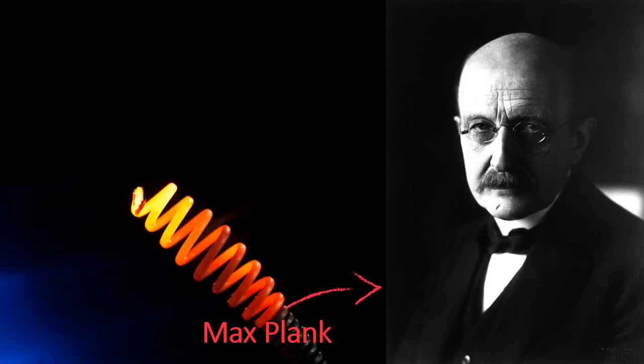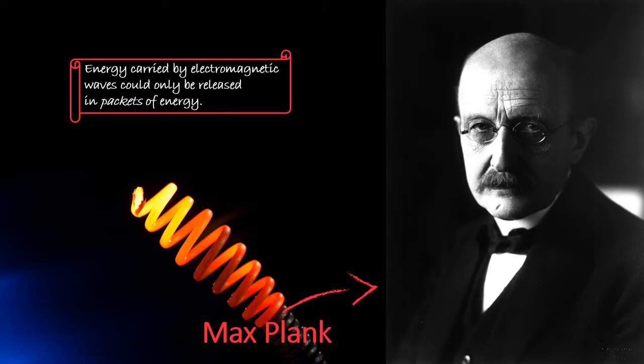In the same year, 1900, a German physicist, Max Planck, found something unusual while studying the black body radiation. He repeated the experiment over and over again and ended up with the same anomaly. He was frustrated and wrote a paper saying, electromagnetic waves don't behave in the way it happened to me.